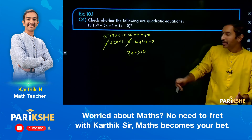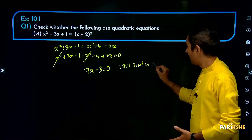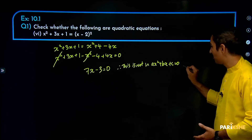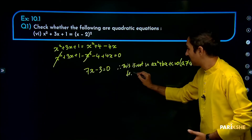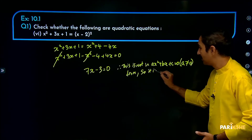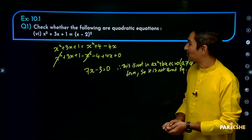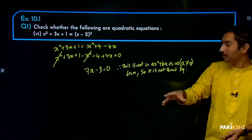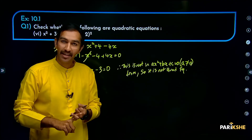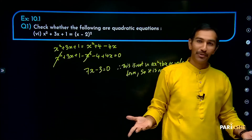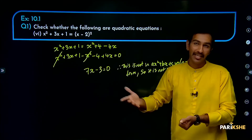After simplification, minus x squared plus x squared cancel. 3x plus 4x equals 7x, minus 4 plus 1 equals minus 3, giving 7x minus 3 equal to 0. A is equal to 0, therefore this is not in the form of ax squared plus bx plus c equal to 0 where a is not equal to 0. The degree is 1, so it is not a quadratic equation.